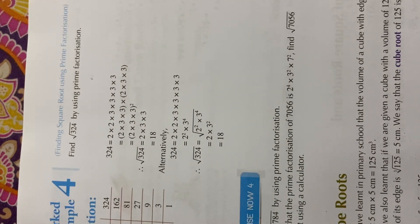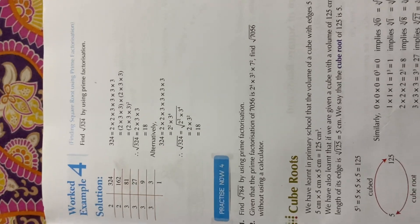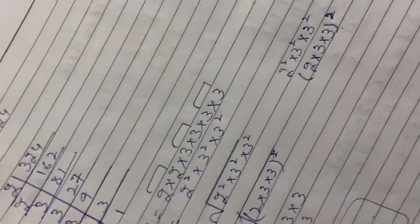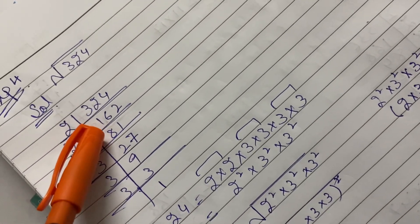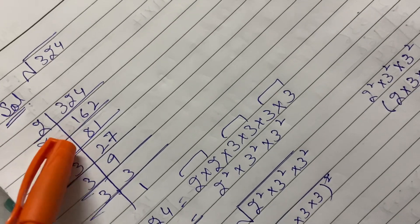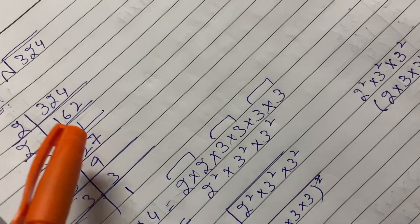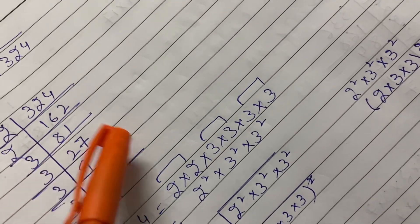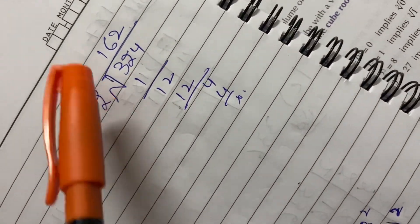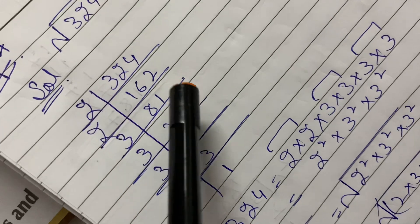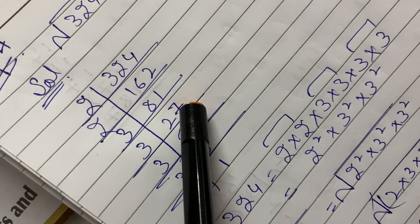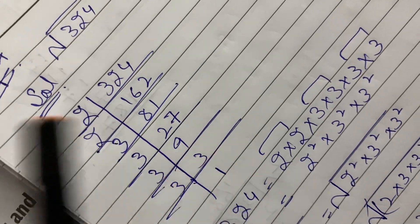Next example: find the square root of 324 using prime factorization. Starting with 324, we divide by 2: 324 ÷ 2 = 162, 162 ÷ 2 = 81. Since 81 is odd, we divide by 3: 81 ÷ 3 = 27, 27 ÷ 3 = 9, 9 ÷ 3 = 3, 3 ÷ 3 = 1. So the prime factors are 2 × 2 × 3 × 3 × 3 × 3.